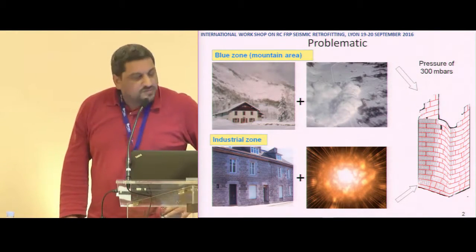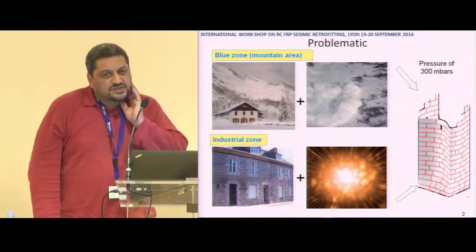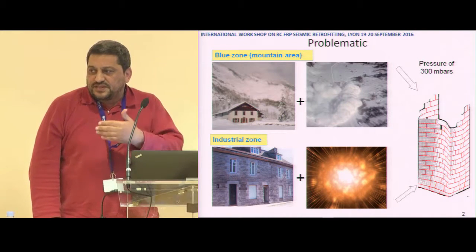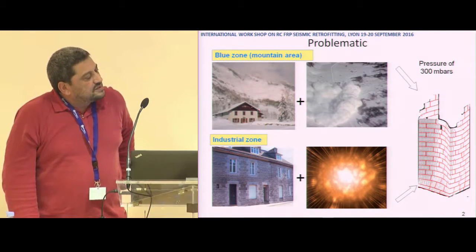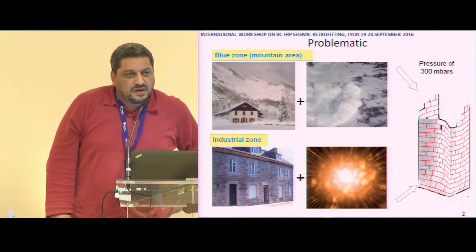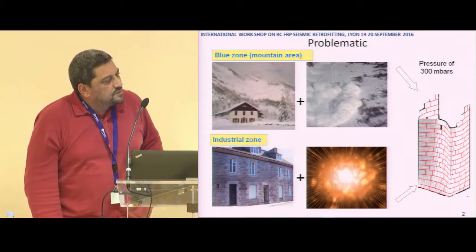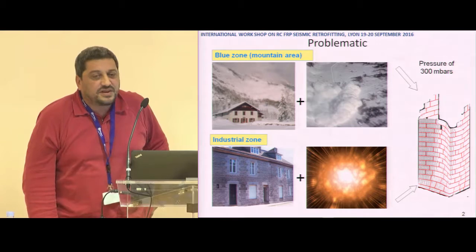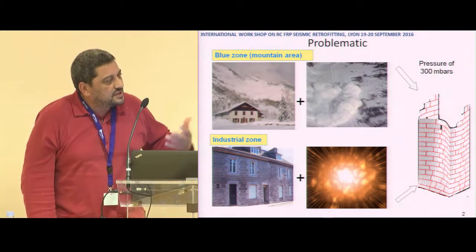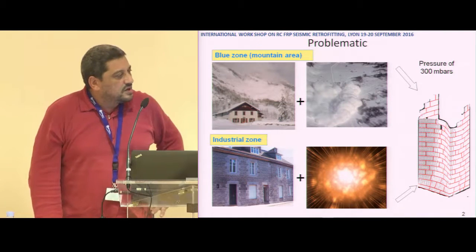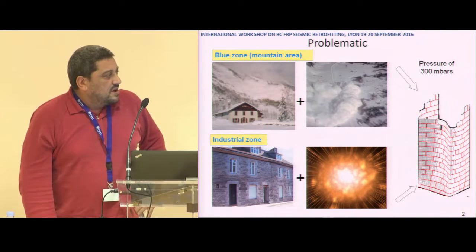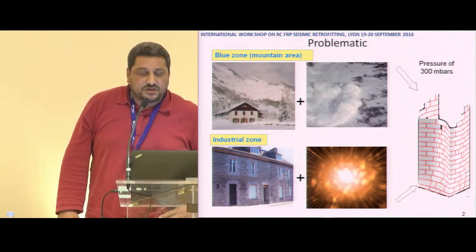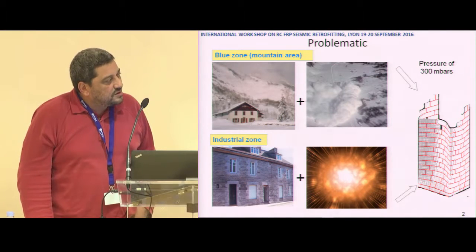The problematic: in some cases masonry can sustain external surface pressure. This is the case when we have blast loads induced by an explosion, or for example in mountain areas, houses can experience snow avalanches which induce overpressure on the masonry wall. Out-of-plane load can also be induced by seismic loads or by extreme wind.